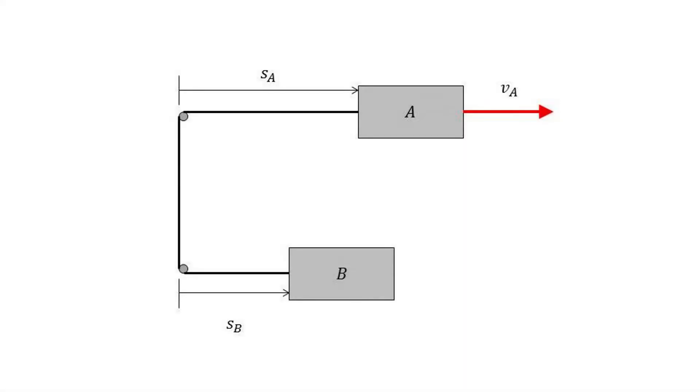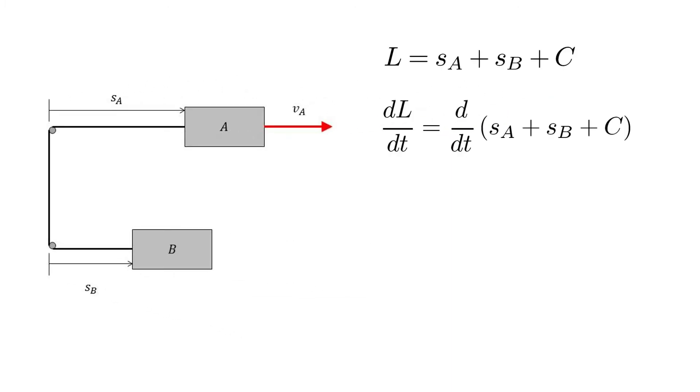The second scenario features two pulleys rather than just one, but is actually much simpler. Again, taking a time derivative of the length expression will give us the relationship between the carts. In this case, their velocity should be equal but in opposite directions at all times.